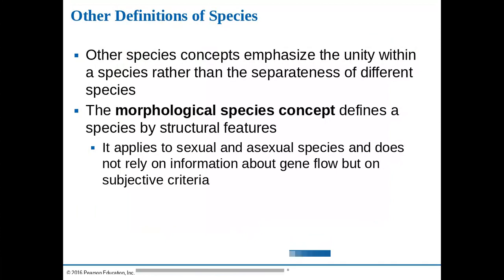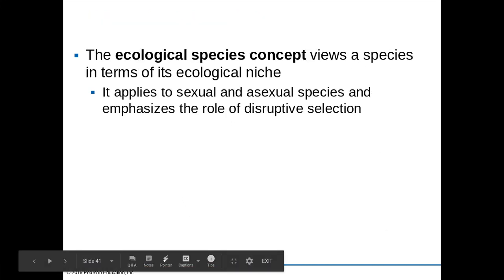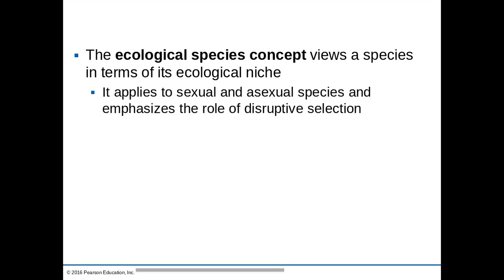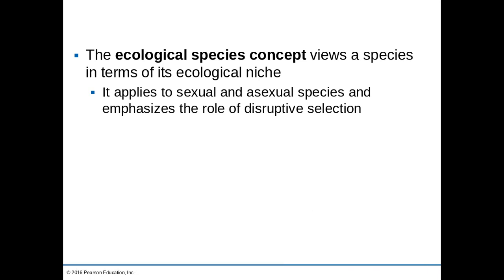The morphological species concept identifies a species based on structural features. But this is subjective — for example, we have arms and monkeys have arms; does that make us the same species? It can include asexual species but doesn't rely on anything genetically based. The ecological species concept views a species in terms of its ecological niche — where it's located on Earth and what it uses in its environment. This works for both asexual and sexual species but emphasizes disruptive selection, raising the question of what to do with intermediate forms.